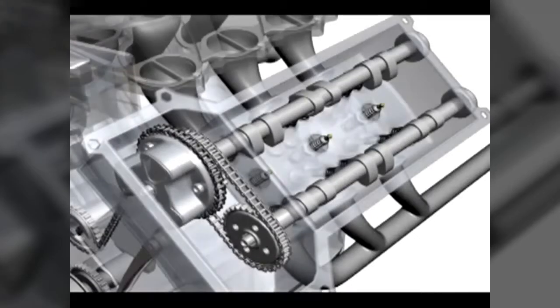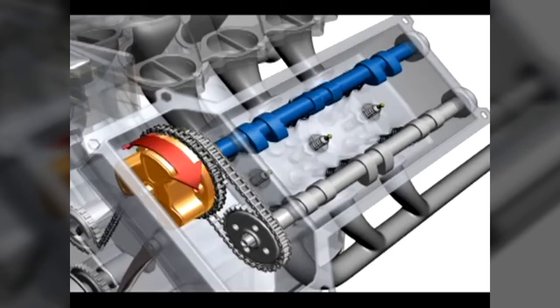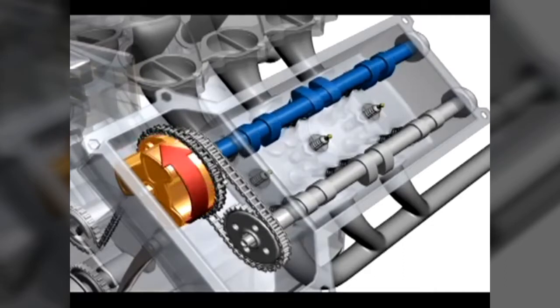Variable valve timing with intelligence, or VVT-i, is one reason why Toyota cars and trucks develop horsepower and torque across a broad RPM range or power band. A computerized system changes the intake valve timing to optimize the engine's breathing depending on the conditions.